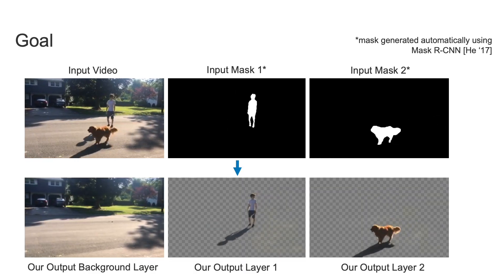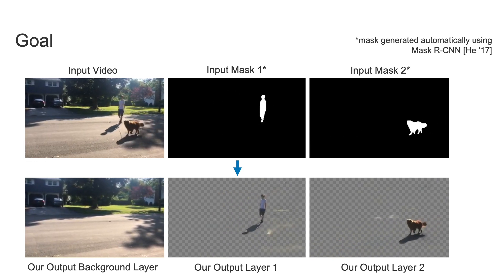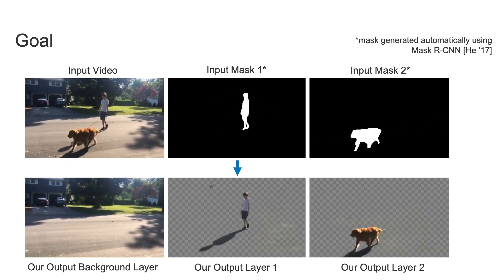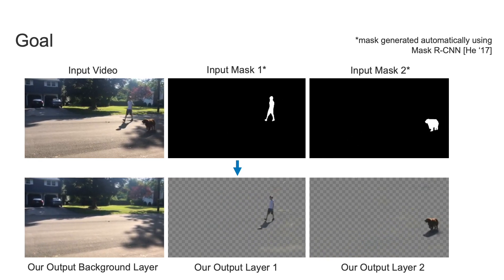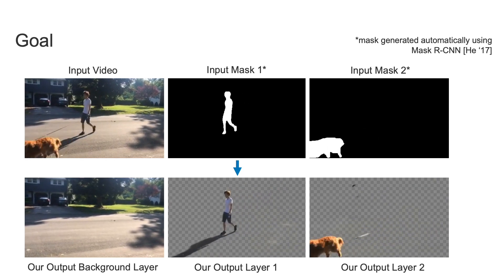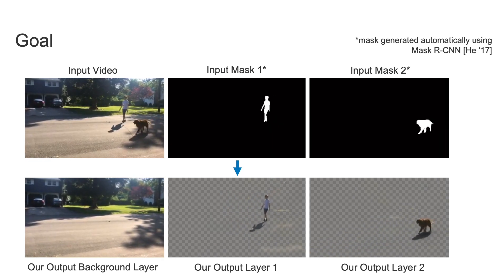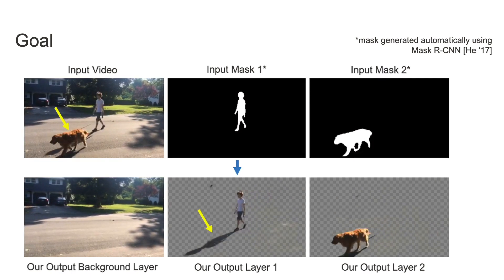In this work, we address a new problem we've proposed: given an input video along with rough input masks indicating some objects of interest like a person or a dog, the goal is to predict a layer that includes not only the object but also correlated effects like shadows or reflections. Notice in the original video that the dog walks in front of the person's shadow and occludes it, but in the person's output layer, that shadow is completed by our method quite realistically.